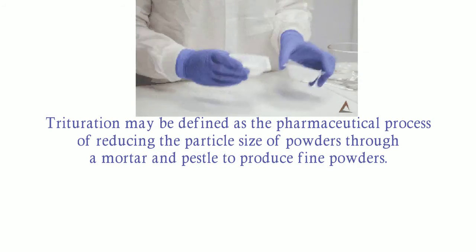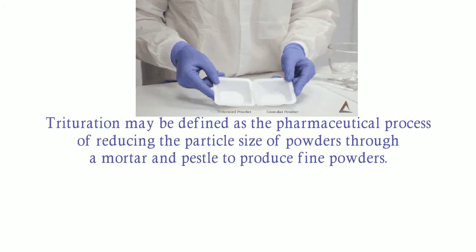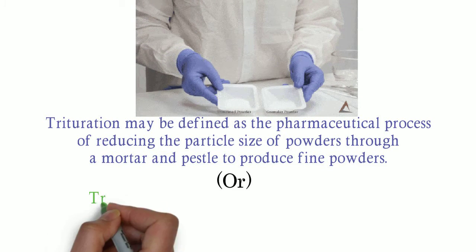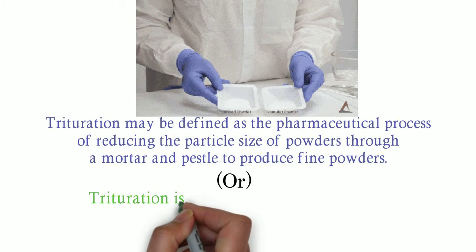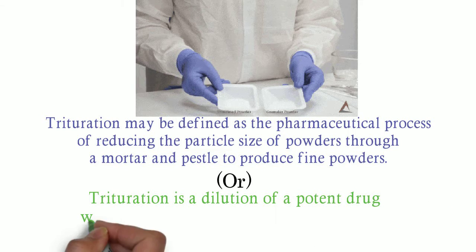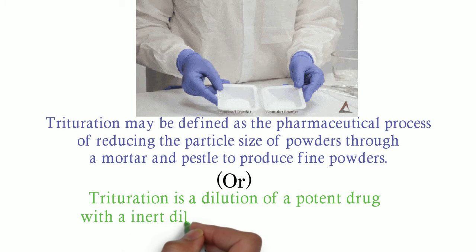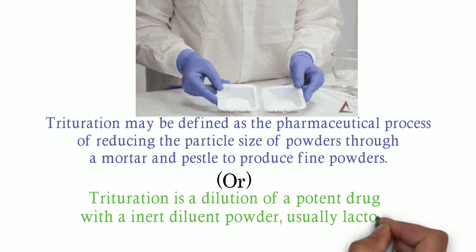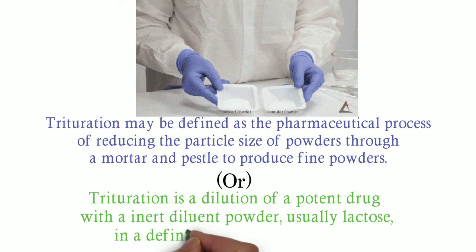Trituration can also be defined as follows: trituration is a dilution of a potent drug with an inert diluent powder, usually lactose, in a definite proportion by weight. The diluent mostly used is starch.